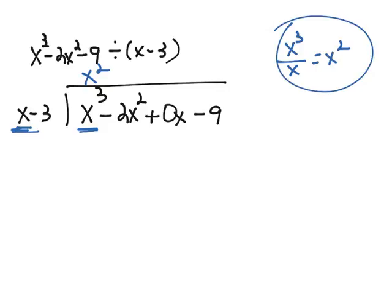It's easier in the format we're used to in algebra. After we see that x divides into x³, x² times, we multiply back. x² times x is x³. x² times -3 is -3x².